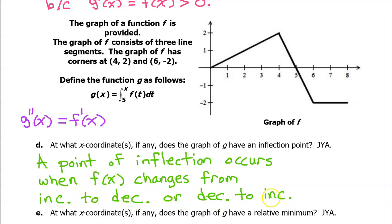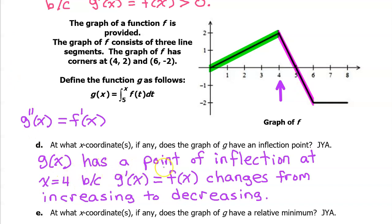This only occurs at x equals 4, where f goes from increasing to decreasing. Here's how I want you to write your answer: g of x has a point of inflection at x equals 4, because g prime of x, which equals f of x, changes from increasing to decreasing. We have to mention f of x because that's the only graph we're given. We mention g prime of x because we are relating back to the original function we are being asked about, which is function g.